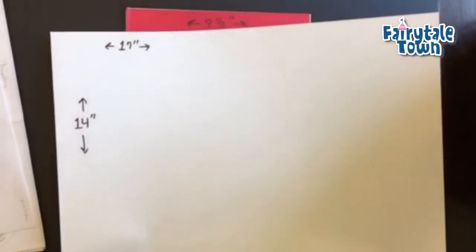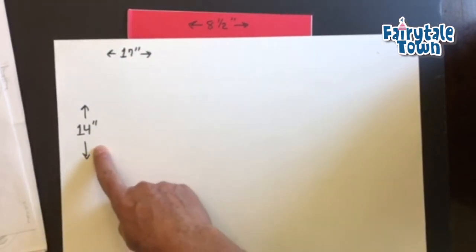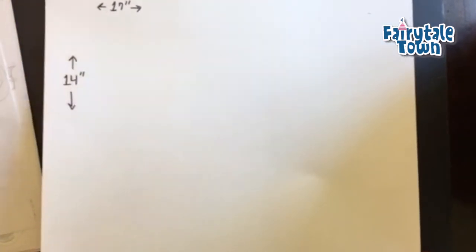We're going to use this because the red is going to show up a little bit better over. This giant paper here, which is 14 inches by 17 inches. This is what I do all my big projects on, and this is fantastic paper. So we're going to make this the folder.